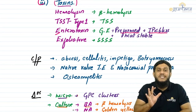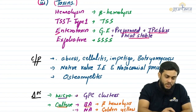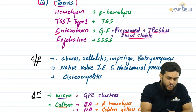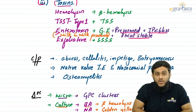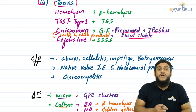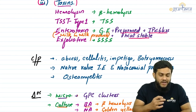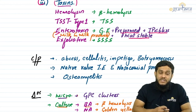Because the enterotoxin is preformed, the incubation period is approximately one to six hours, and this toxin is heat stable. The source of enterotoxin is milk and milk products. Because it is a preformed, heat-stable toxin, the incubation is very short — one to six hours. These are the important points regarding staphylococcal enterotoxin.